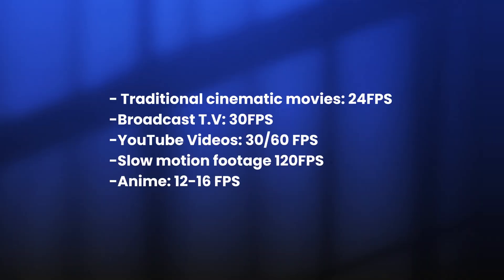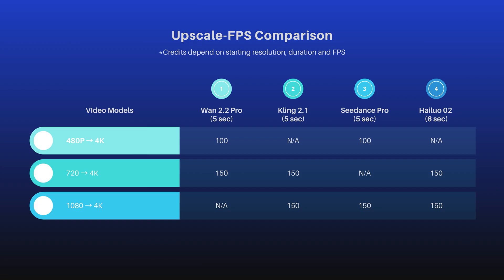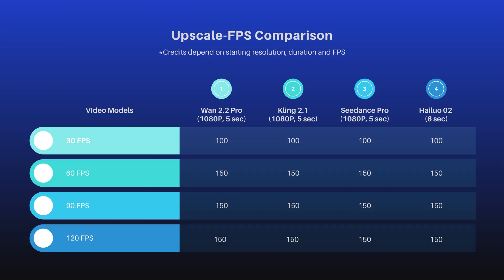Broadcast TV and your typical YouTube video is typically shot in 30 frames per second. Some may use 60 to get more of a smoother feel, especially if you're a streamer. But once you get up to 90 to 120 frames per second, one of the main reasons to shoot at 120 fps is to slow down that footage — otherwise, 120 fps is kind of overkill.